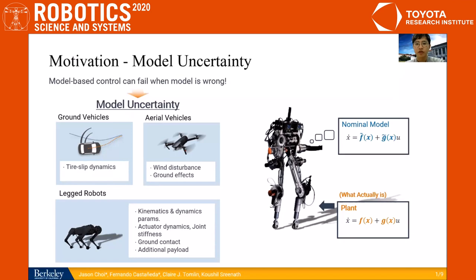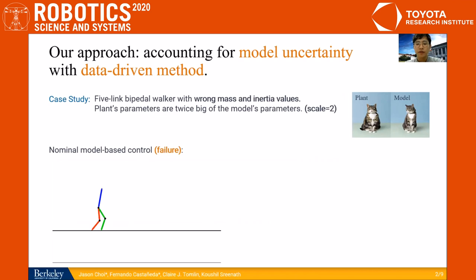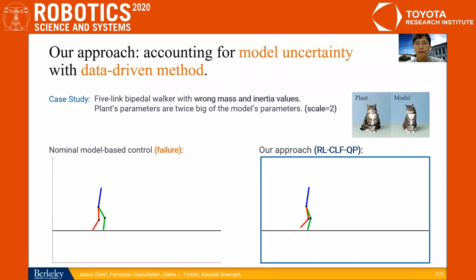In this video, you can see a Lyapunov-based controller failing to stabilize a 5-link walker due to model uncertainty. Here, the model used has wrong values of the masses and inertias of the links. With our approach, we are able to learn this model uncertainty and obtain a stabilizing controller.